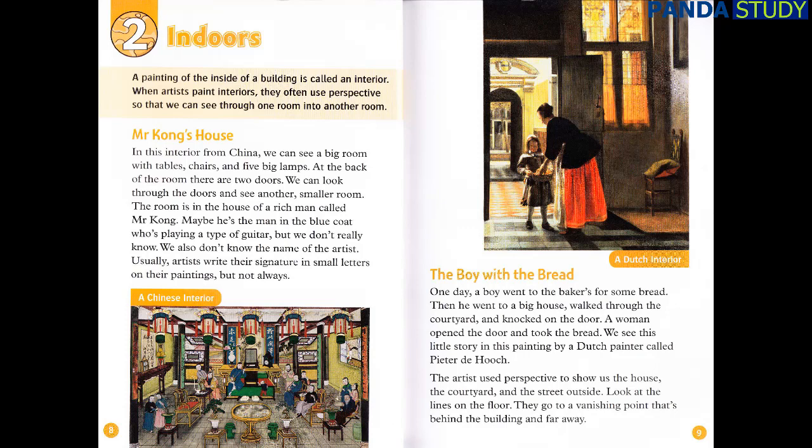The Boy with the Bread. One day, a boy went to the baker's for some bread. Then, he went to a big house, walked through the courtyard, and knocked on the door. A woman opened the door and took the bread. We see this little story in this painting by a Dutch painter called Pieter de Hoogh. The artist used perspective to show us the house, the courtyard, and the street outside. Look at the lines on the floor. They go to a vanishing point that's behind the building and far away.